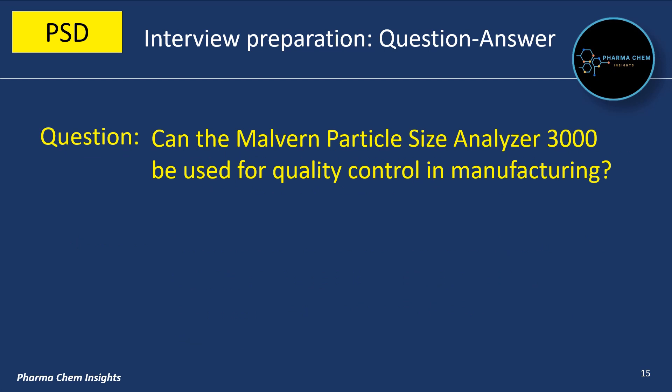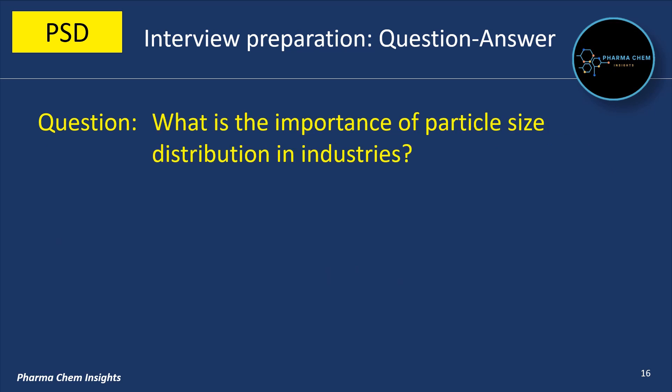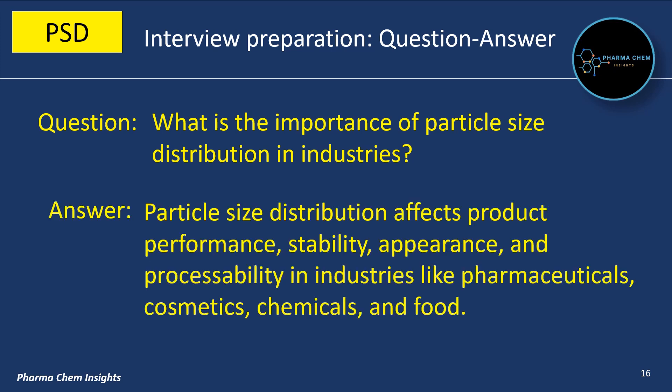Can the Malvern Particle Size Analyzer 3000 be used for quality control in manufacturing? Yes, it is widely used for quality control in various manufacturing processes to ensure product consistency. What is the importance of particle size distribution in industries? Particle size distribution affects product performance, stability, appearance, and processability in industries like pharmaceuticals, cosmetics, chemicals, and food.